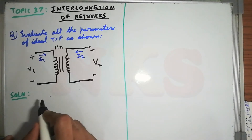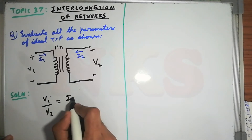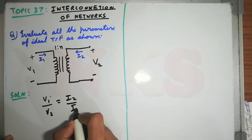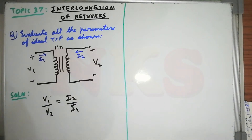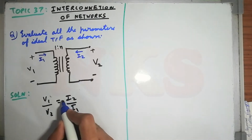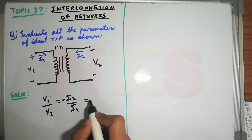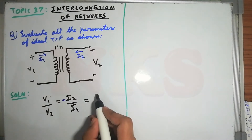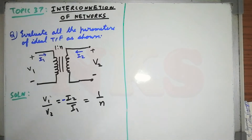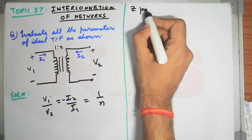For the transformer, the first thing that comes to mind is that it is ideal, so v1/v2 equals i2/i1. But since the current direction here is different from the general transformer convention, it becomes minus i2/i1, equal to the given ratio 1/n. Now we will try finding the Z parameters.